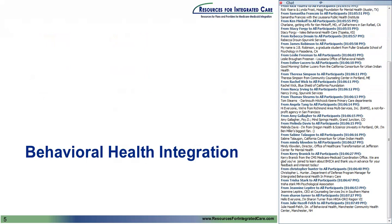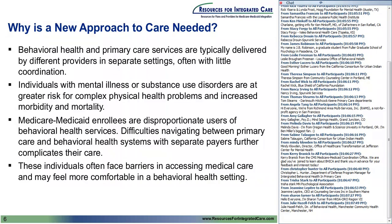The challenges inherent in healthcare are secondary to fragmentation. We know how egregious the divide is between mental and physical health, and we're doing everything in our power to bring them together. This is one of the most promising value-added propositions for achieving the triple aim. Today we're focusing on the specialty mental health space and ways to bring primary care to that population. Individuals with mental health or substance use disorders are at greater risk for complex physical health problems and increased morbidity and mortality.